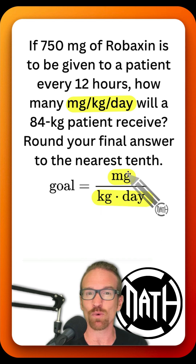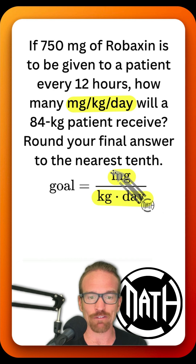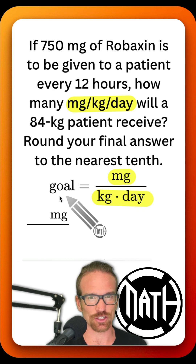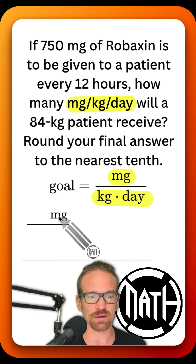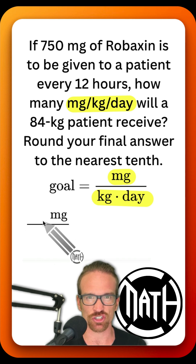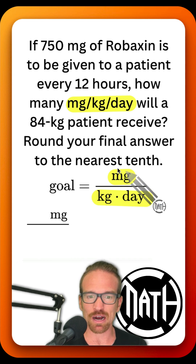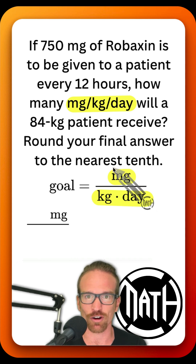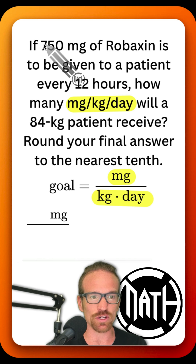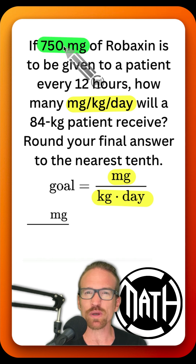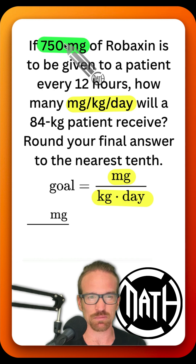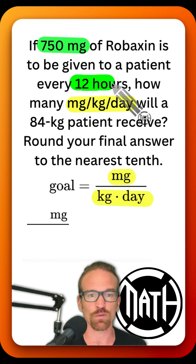Here's our goal. When I have a fraction in my goal, I focus on the top word first: milligrams. I've put milligrams at the top of my first fraction in the dimensional analysis, because that's the top word in our goal. I want to look back at my problem and hunt this word down — in this case, we do see 750 milligrams.